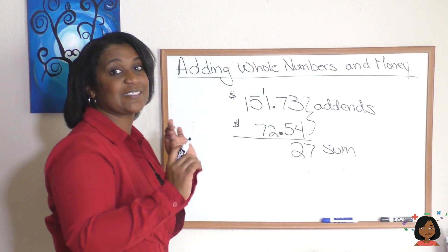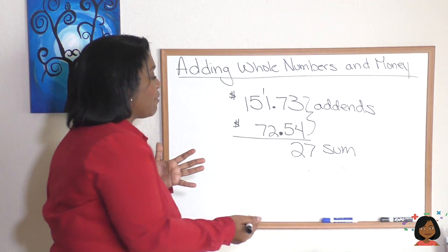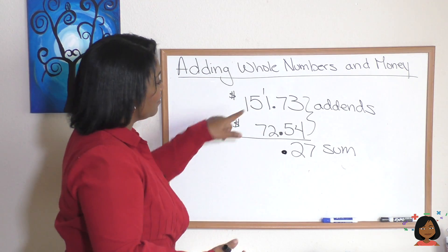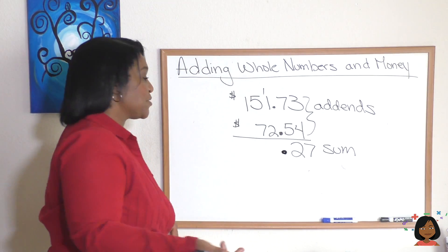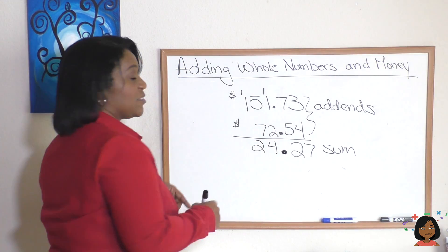I personally like to just bring down my decimal point right here so I don't forget that I'm dealing with money. So you can go ahead and write that decimal, again they are lined up and keep it going. One plus one is two, two plus two is four, seven and five is twelve.